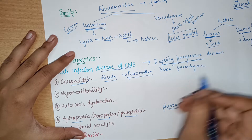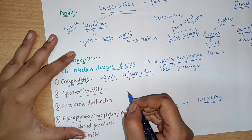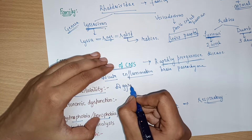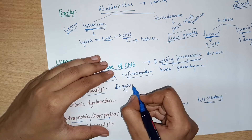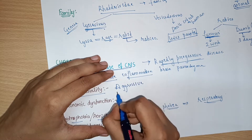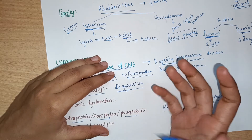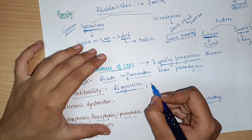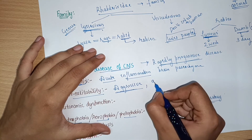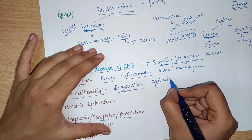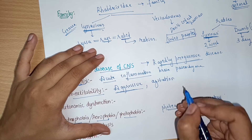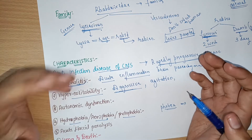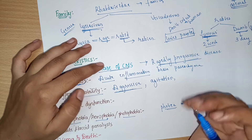The patient will show hyperexcitability symptoms — they will be more aggressive, agitated, and hyperactive. The patient will be more angry, furious, and violent in nature. They are mainly intolerable; they do not want to hear anyone's sound or come in contact with anyone.